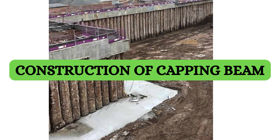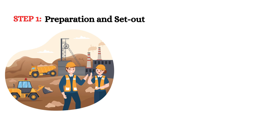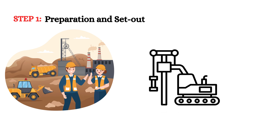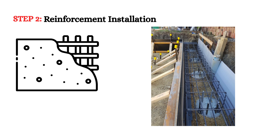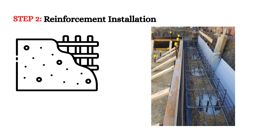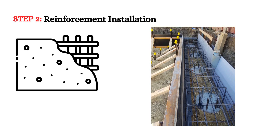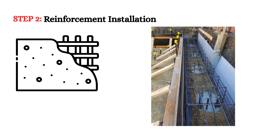How is a capping beam constructed? Step 1 — Preparation and set-out: Construction begins after the piles are installed, and the beam alignment is marked accurately across the pile heads. Step 2 — Reinforcement installation: Steel reinforcement is placed over the piles as per structural drawings. This reinforcement is critical for the strength and durability of the beam.